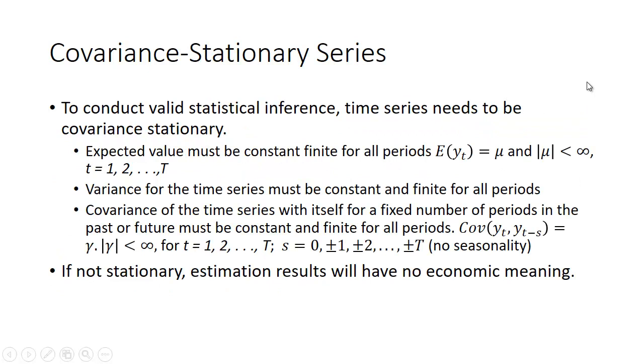Sometimes they call it covariance stationary, or just stationary or stationarity. In order to conduct valid statistical inference, the time series needs to be stationary. It means the expected value must be constant and finite for all periods. So that is the expected value E(y_t), and we'll call that mean mu. Its absolute value has to be less than infinity.